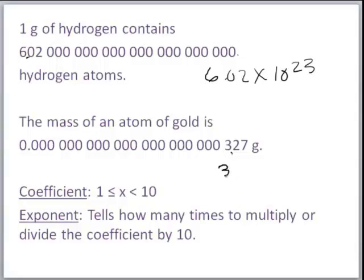So we would write that number as 3.27 times 10 to the negative 22nd grams. This negative exponent tells us that we move the decimal to the right. If we were going to take this number out of scientific notation, we would divide by 10 twenty-two times, moving the decimal in that direction.